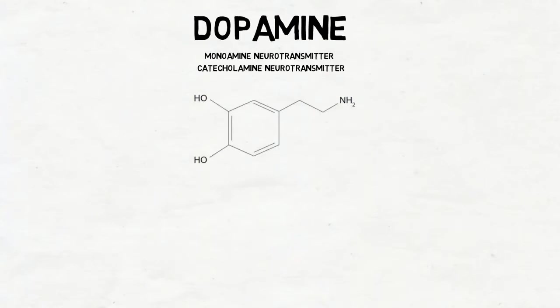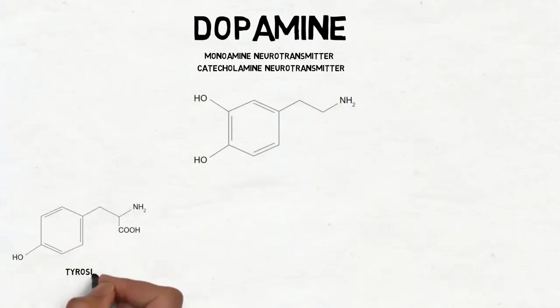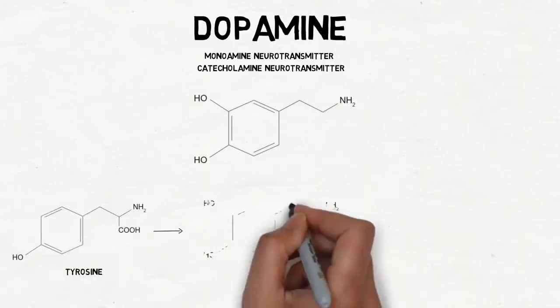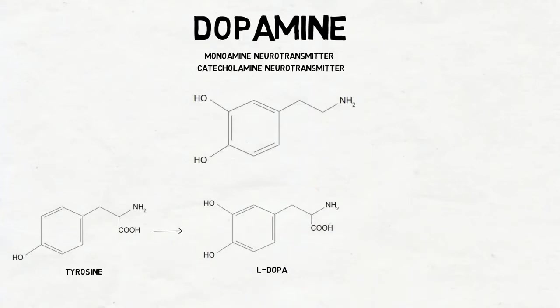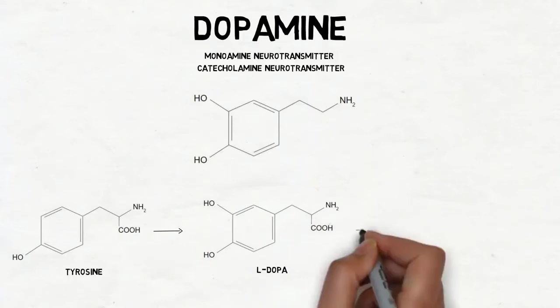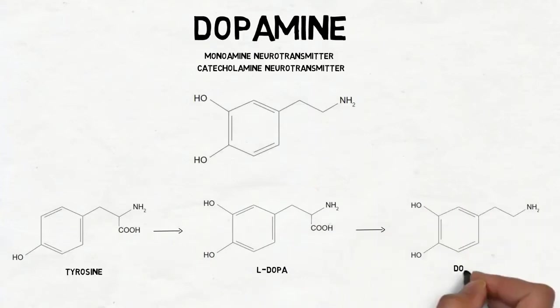To synthesize dopamine, the amino acid tyrosine is converted to L-dopa. Then L-dopa is decarboxylated to form dopamine.